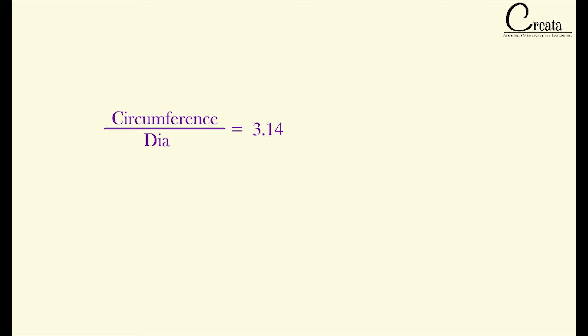So we got that this ratio is constant and in mathematics this ratio has a special significance. This ratio is called pi and it is denoted by this special symbol. It is also written as 22 by 7 which will come out to be 3.14.